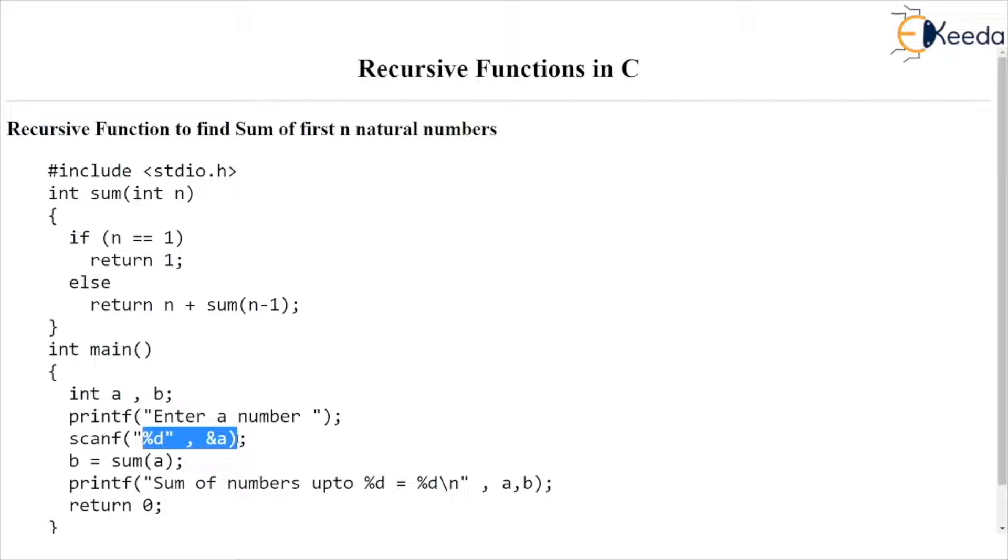That means we want to find 1 plus 2 plus 3. So here comes the call to the function b equals sum a. Definitely this call is b equals sum 3 because a is 3 and the function starts with the parameter n as 3.